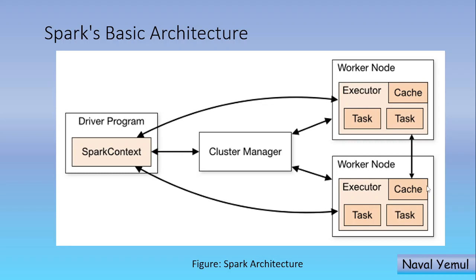So now let us focus only on Spark. Here there is one driver node, or you can call it the driver program. And you have N number of worker nodes. Why N? It depends on the workload, depends upon your data — depending upon that you can choose your worker nodes. In this image I can see there are only two worker nodes: worker node 1 and worker node 2. Depending upon the application and the data, you can choose your worker nodes — two, three, one, and so on.